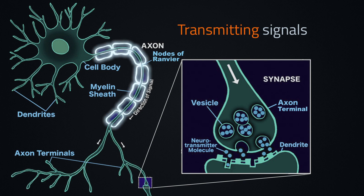The axon is covered with myelin sheath separated by gaps, which are called the nodes of Ranvier. The myelin sheath acts like an insulator, helping to propagate the signal, and the nodes of Ranvier help to amplify it.